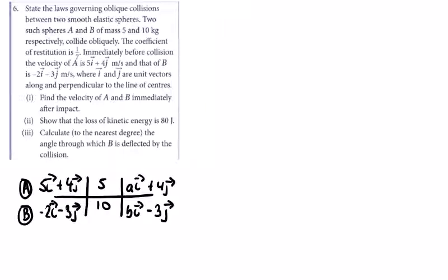First mass 5 times 5 in the i direction, plus 10 times minus 2 in the i direction, equals 5 times a plus 10 times b. So 25 minus 20 equals 5a plus 10b, or 1 equals a plus 2b.